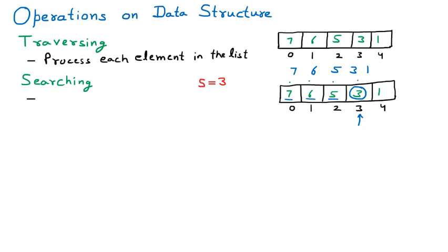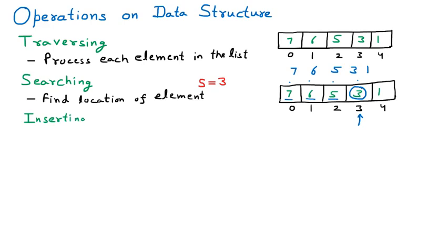We can define searching as finding the location of an element in the list. The next operation we can apply on the data structure is called inserting. Inserting or insertion is the next operation. Suppose we are given a data structure like an array with some numbers, and we are going to add one more number — that is called inserting.